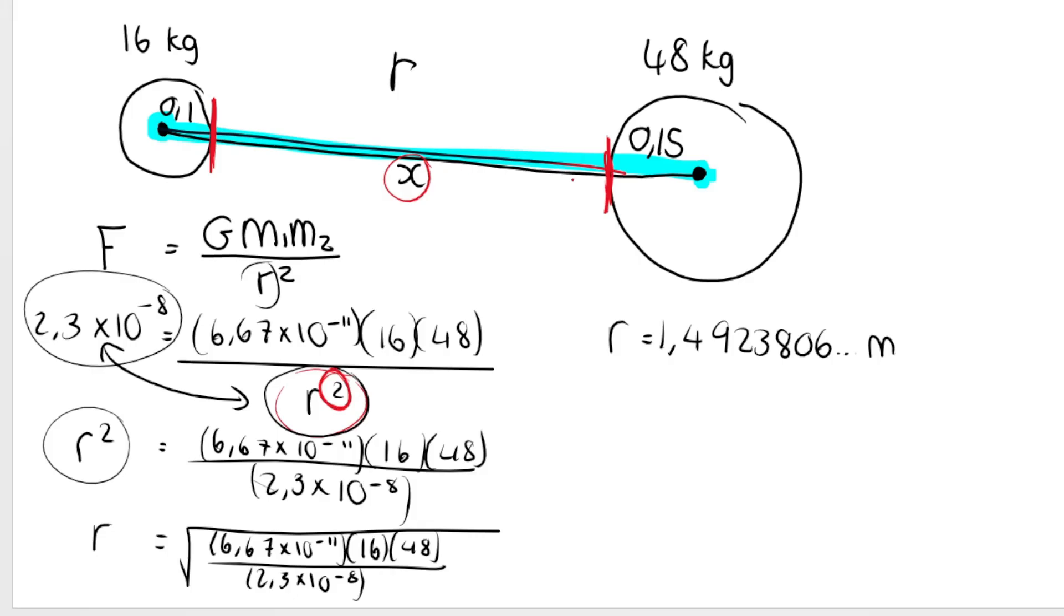So basically I need to take the big long blue distance, which is 1.49 so on. I need to minus this distance, the radius of the 16 kilogram, and I need to minus this distance, the radius of the 48 kilogram.